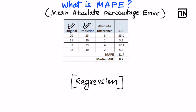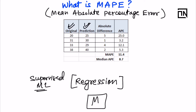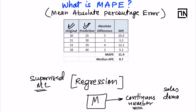When you create a regression model, which is a supervised machine learning technique, you are creating a model that tries to predict a continuous number — for example, sales, demand, number of passengers, etc.